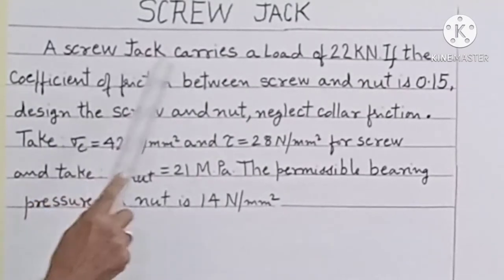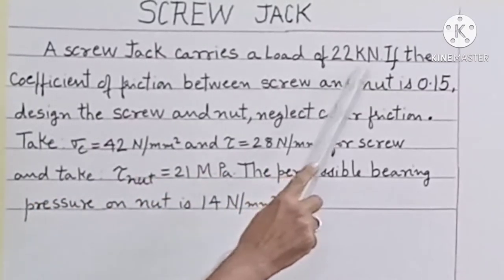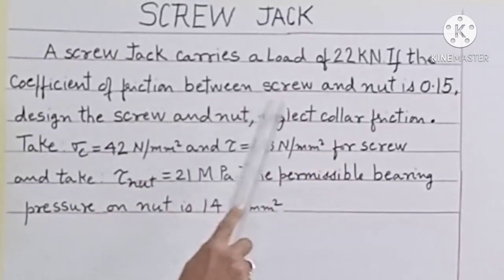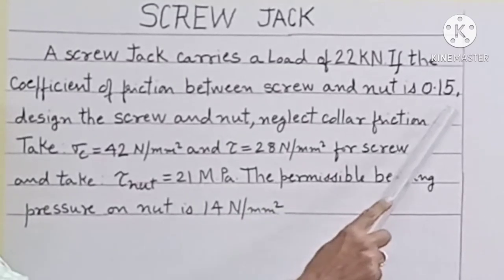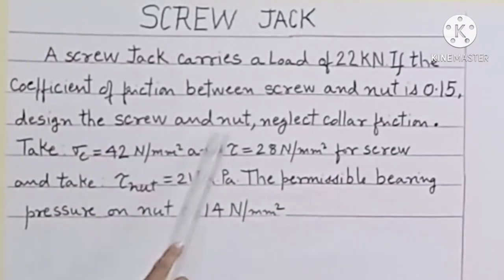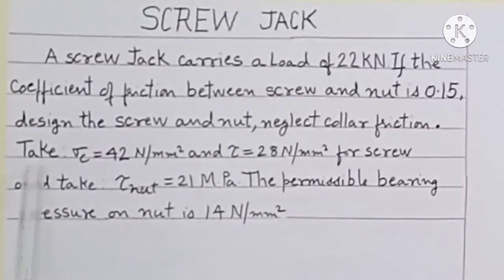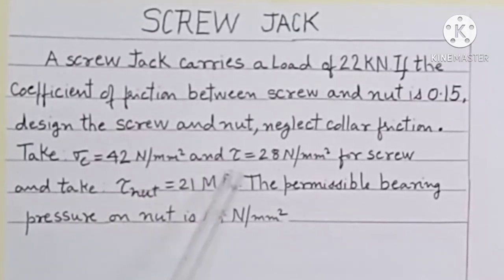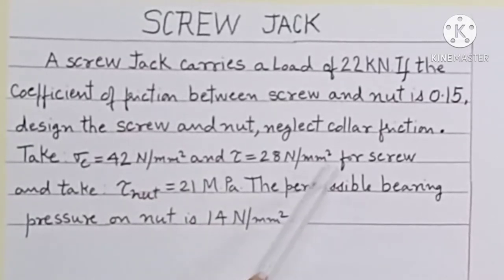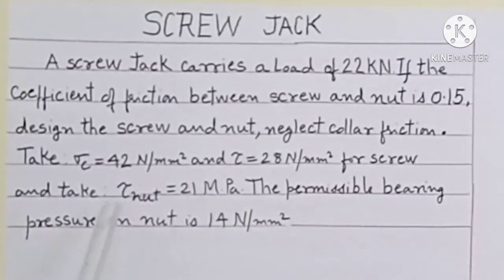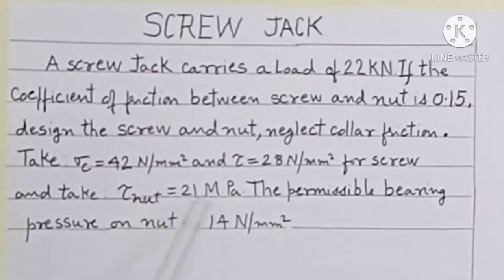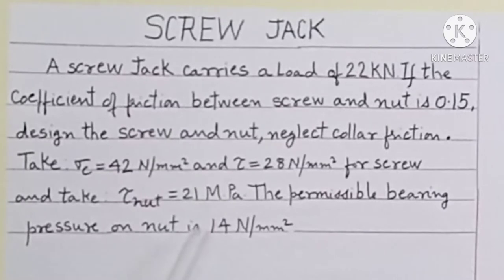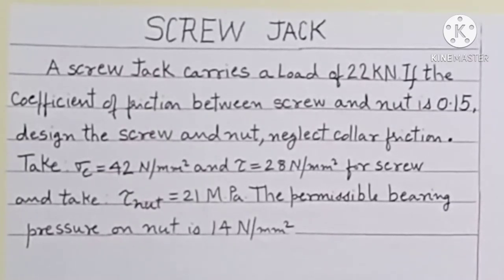A screw jack carries a load of 22 kN. If the coefficient of friction between screw and nut is 0.15, design the screw and nut. Neglect collar friction. Take σC equal to 42 N/mm² and τ equal to 28 N/mm² for screw. For nut, τ is equal to 21 MPa, and the permissible bearing pressure on nut is 14 N/mm².